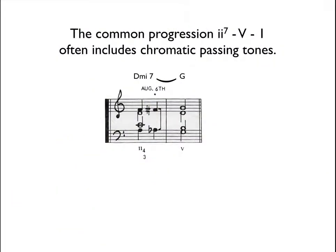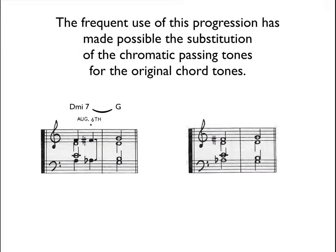Augmented six chords evolved from the common two-five-one progression by modifying the two chord. Eventually, the chromatic passing tones — the interval of an augmented six — became part of the chord called an augmented six chord. Since a half step has more pulling tendency than a whole step, approaching the dominant tone with both chromatic approaches at the same time creates the strongest possible pull to the dominant. The half step above the dominant combined with the half step below the dominant create an interval of an augmented sixth.